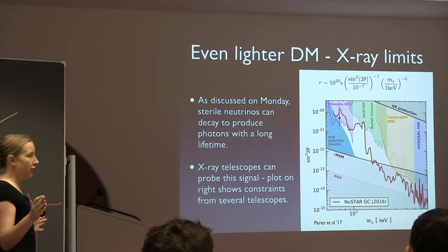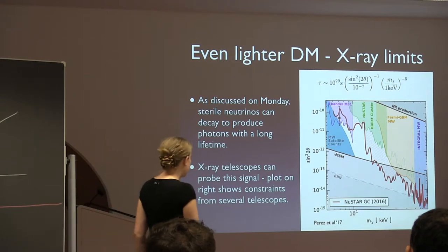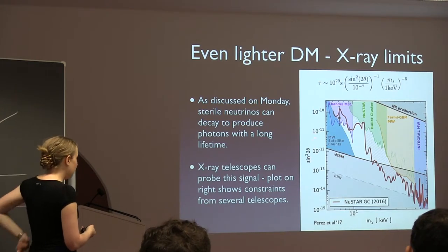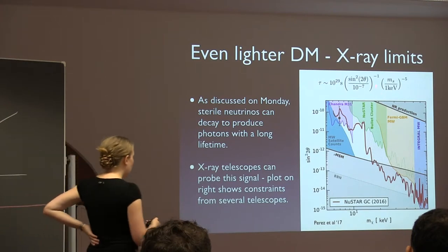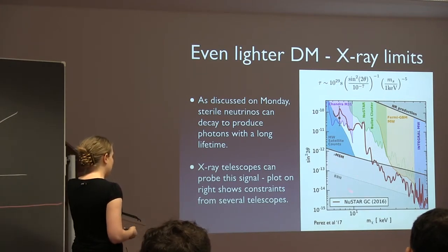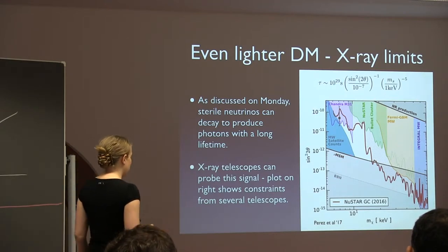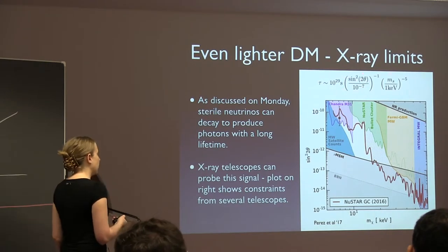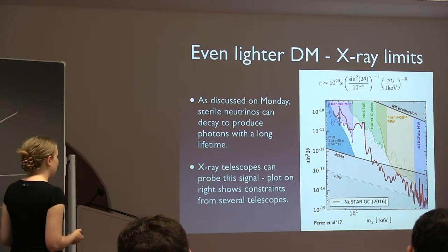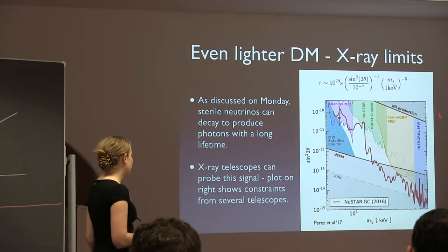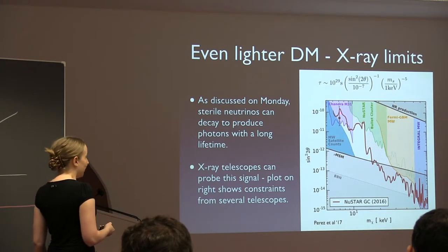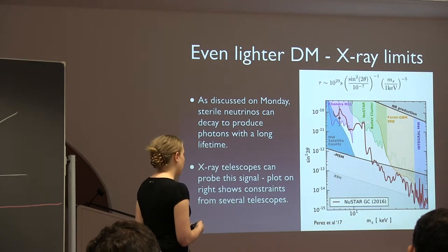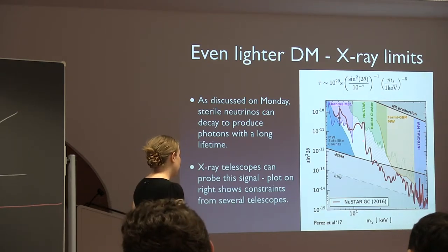This constraint on sterile neutrino decay is parametrized in terms of the mixing angle — decay to photons with a long lifetime. The kinds of lifetimes being constrained are around 10^28 to 10^30 seconds. This dot here is the 3.5 keV line anomaly, which we'll discuss later. Sterile neutrinos are pretty constrained by these limits, though there may be a small window at small mixing angle and masses around 7 keV up to a couple of tens of keV.